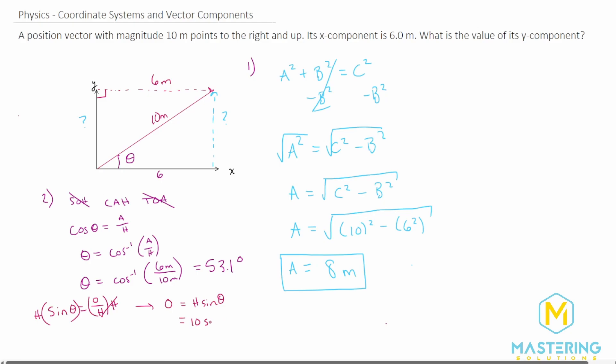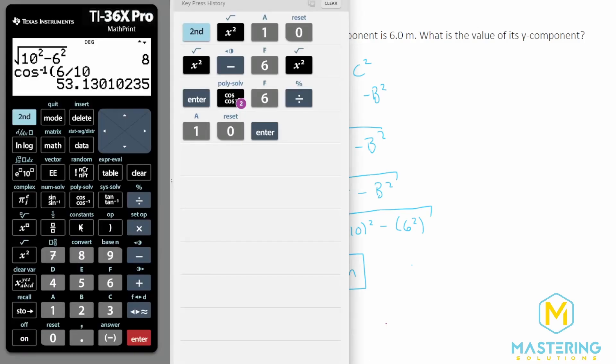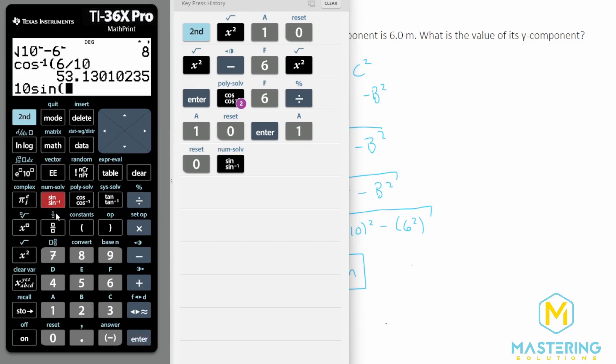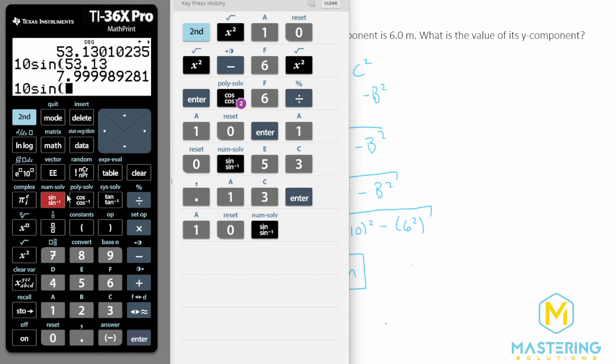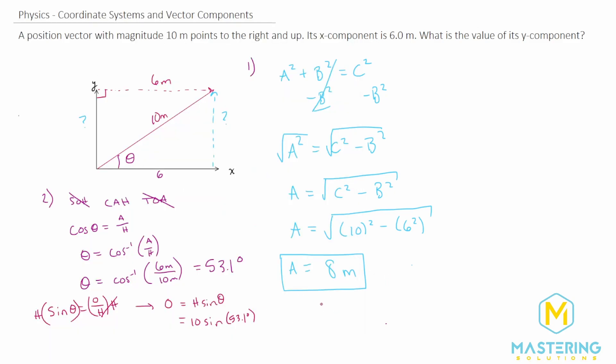Hypotenuse is 10 so we'll take 10 times the sine of 53.1 which will give us this opposite value here. So I'm doing it both ways to show you that it doesn't matter which way you go you will get the exact same answer. Of course we rounded our answer for the degrees right here but if you would take 10 sine of this answer you'll see that we get 8 the exact same. So however you come to it, the answer is 8 for the y component of this vector.